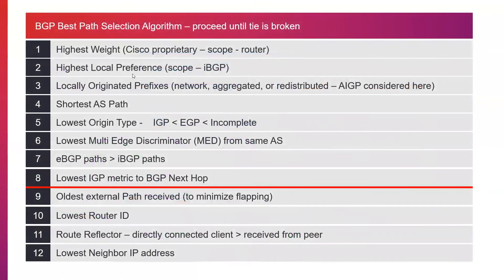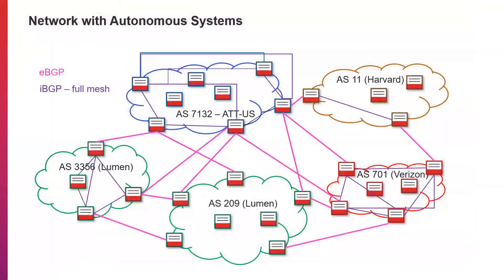If local preference is not set, the next thing we look at is locally originated prefixes. These are prefixes that come from either a network command — a BGP command to create a static route on the router — or if something is directly connected, we might use a network command to advertise that route. We also look at aggregated routes and redistributed routes, which are routes redistributed from the IGP. If a border router learns routes from ISIS, it would prefer that. By preferring these local routes, it usually means the route is within the AS, and we want to prefer it before using an external route.